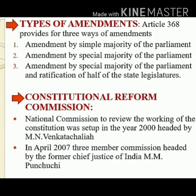We have three types of amendments under Article 368. First, amendment by simple majority. Second, amendment by special majority of the parliament, that is either Lok Sabha or Rajya Sabha — here they need to show special majority. Third, amendment by special majority of the parliament and the ratification of half of the state legislatures. Ratification means something declared by the state legislature that is added to the parliamentary issues. These are the three ways in which we can amend certain things in our constitution.